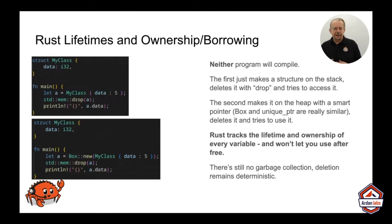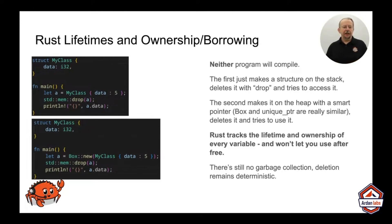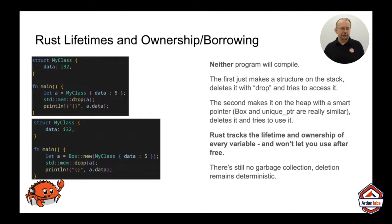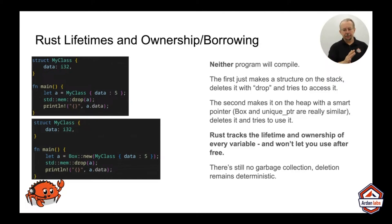Rust makes this a little more complicated. Rust has RAII — the C++ unique pointer system where you allocate something and it's attached to a smart pointer. As soon as that smart pointer goes out of scope, the memory gets deleted.